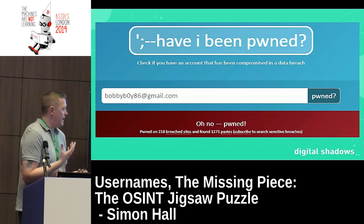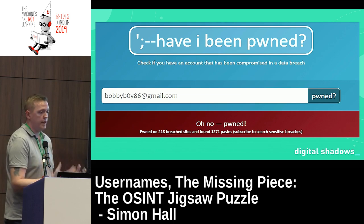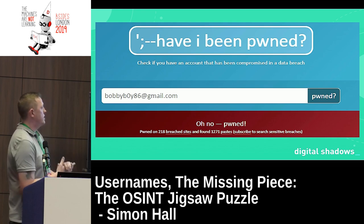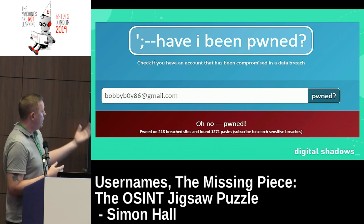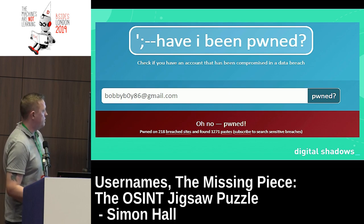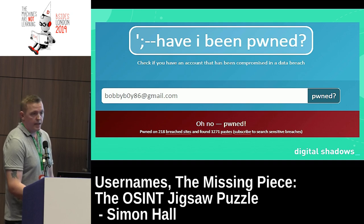Once we've ascertained the email address, we can go through the standard process of throwing it into breach data to find passwords, associated email addresses, and anything else we want to gather. We can also just take the username if we have breach data and do an initial search from it. A username is useless alone is an inaccurate statement — we can do a lot with a username, and attackers do when they perform OSINT.